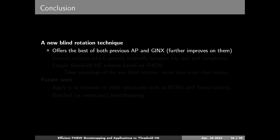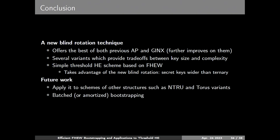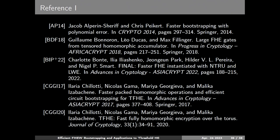Conclusion: we proposed a new blind rotation technique which offers the best of AP and Jinx, and we provided several variants in the paper. Due to its simple key structure and support for larger secrets, we can design threshold homomorphic encryption based on FHE. It would be very interesting to apply our scheme to other structures like integer or torus variants (FINER and TFHG). Improving the best bootstrapping using our technique is also important future work.